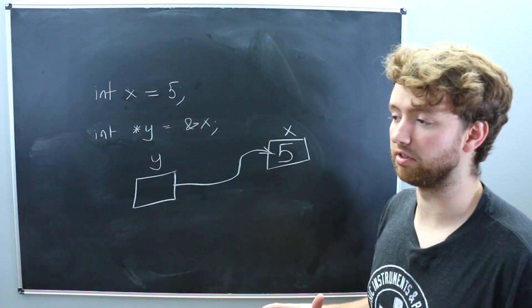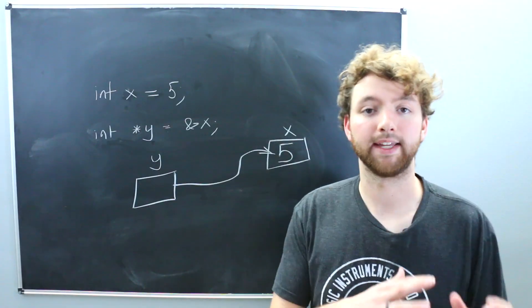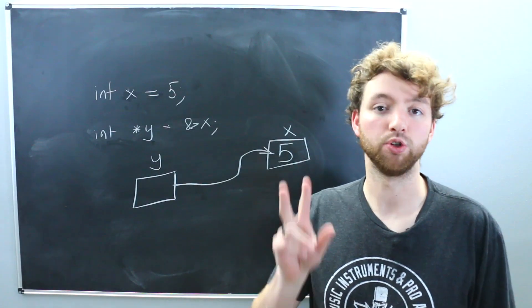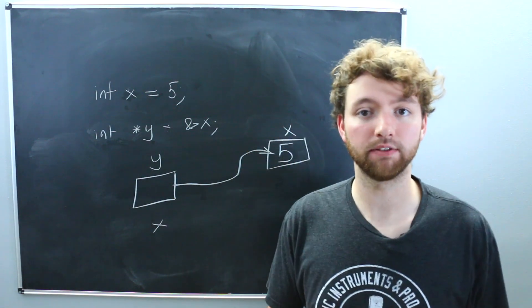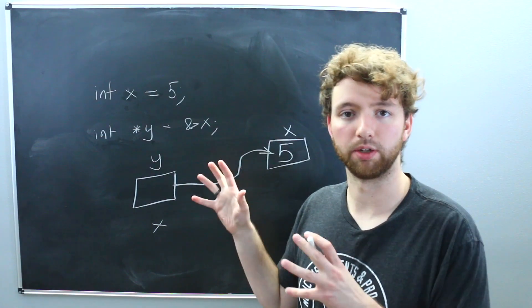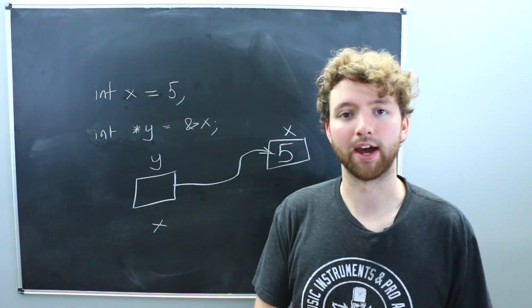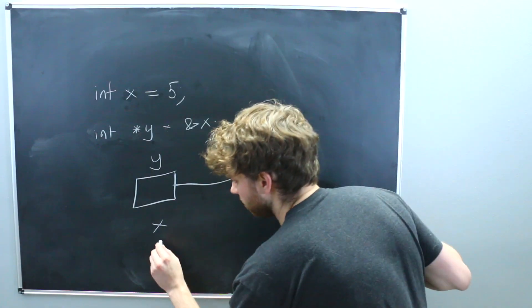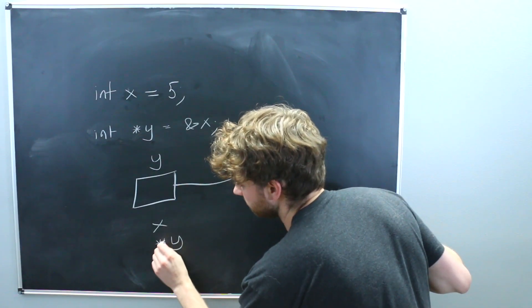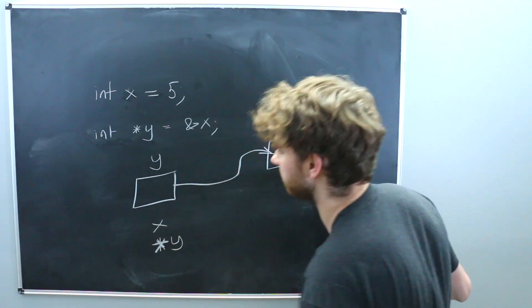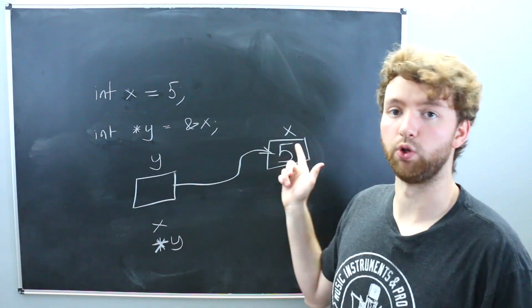This is very similar to how references work. So that's why there's a lot of confusion on when to use which. So if you want to get the integer data, you can do it now two ways. You can use x, that's going to give you the value five, or you can actually tell the computer to get the data wherever y points. And the way you do that is with the asterisk. So you would say asterisk y. It's a terrible asterisk. I'm so sorry, guys. Something like that.